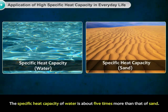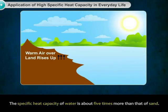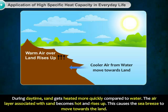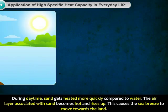The specific heat capacity of water is about 5 times more than that of sand. During daytime, sand gets heated more quickly compared to water. The air layer associated with sand becomes hot and rises up. This causes the sea breeze to move towards the land.